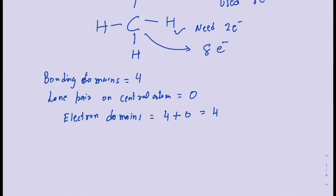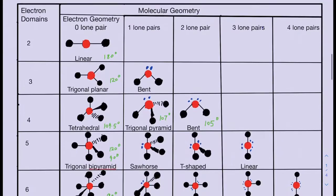You then go to the VSEPR theory chart. You may need to memorize it or you may be given it. On the left column you see total electron domains: two, three, four, five, or six. Up to four electron domains is very common. For five and six electron domains, trigonal bipyramidal and octahedral are also very common shapes.